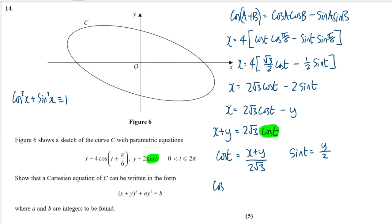So I can square both sides which will give me (x plus y) squared over, 2 squared is 4 and root 3 squared is 3, so 4 times 3 is 12. And here I can have sine t squared is equal to y squared and square the bottom gives me 4.